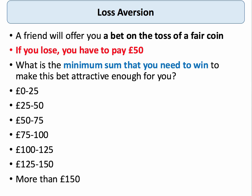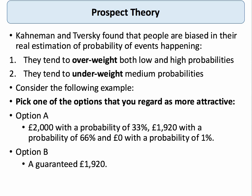Typically people want at least 100 to 125 pounds, perhaps even more, to compensate them for a potential loss of 50 pounds. This is loss aversion. Loss aversion is at the heart of prospect theory, developed by Kahneman and Tversky, who found that people are biased in their estimation of probability — they tend to overweight both low and high probabilities, such as the chance of winning the lottery, and systematically underweight medium probabilities.